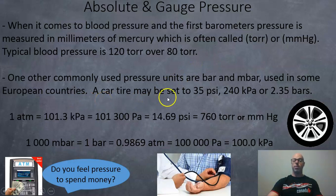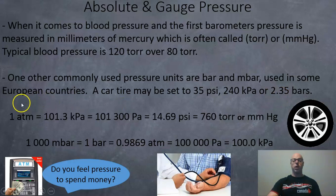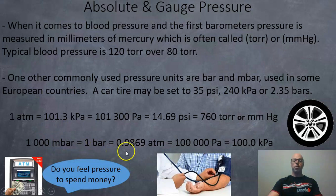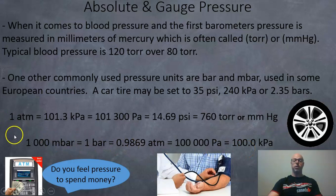A car tire might have a pressure of 35 pounds per square inch, 240 kilopascals, or 2.35 bars. Here are the conversion rates: one atmosphere equals 101.3 kilopascals, which equals 14.69 PSI, which equals 760 torr or millimeters of mercury. Also, 1,000 millibars equals one bar, which equals 0.9869 atmospheres, which equals 100 kilopascals. You can use these values to convert between all the different units.